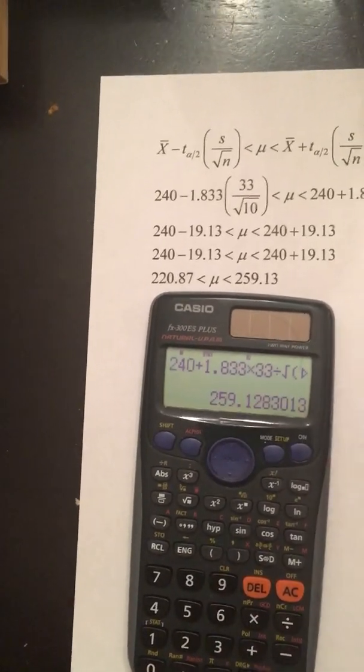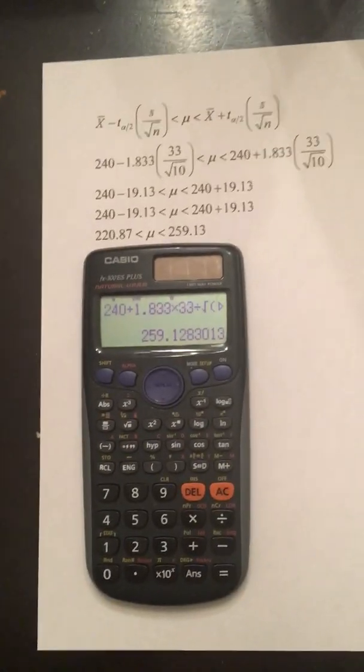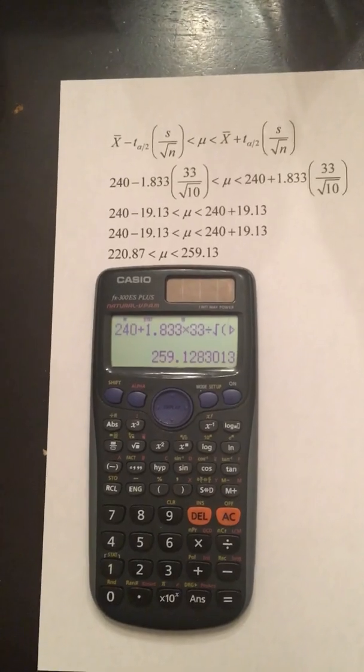We end up with 259.13, and that's how we compute a confidence interval with the Casio.